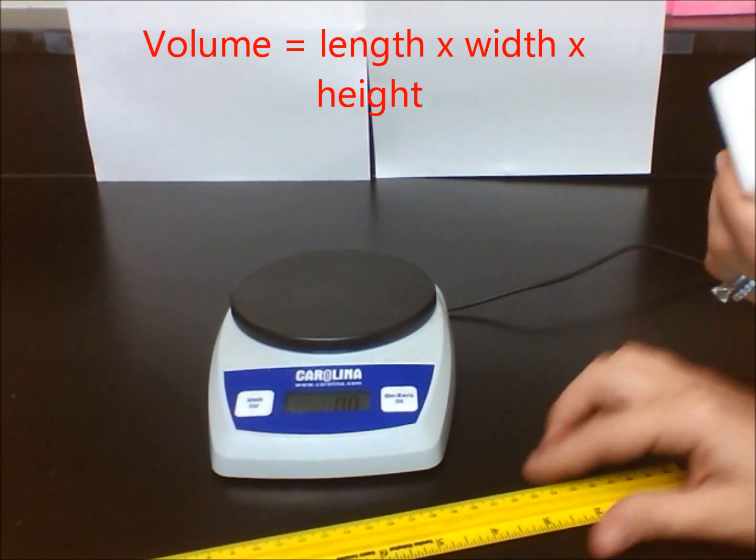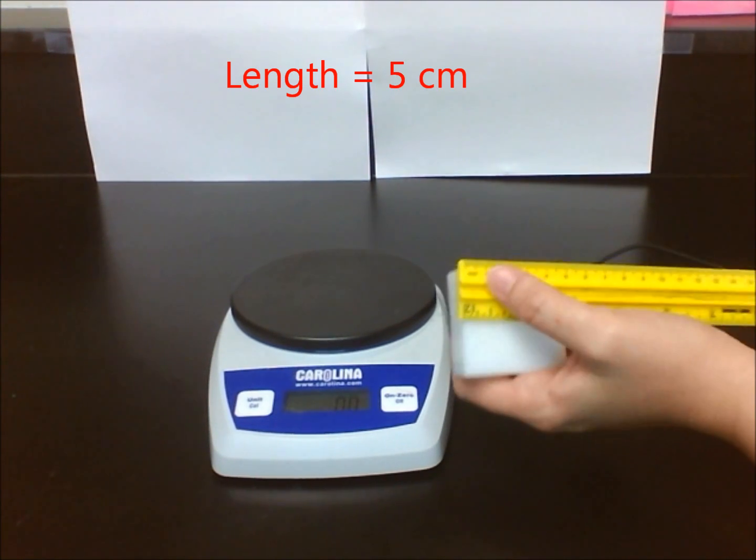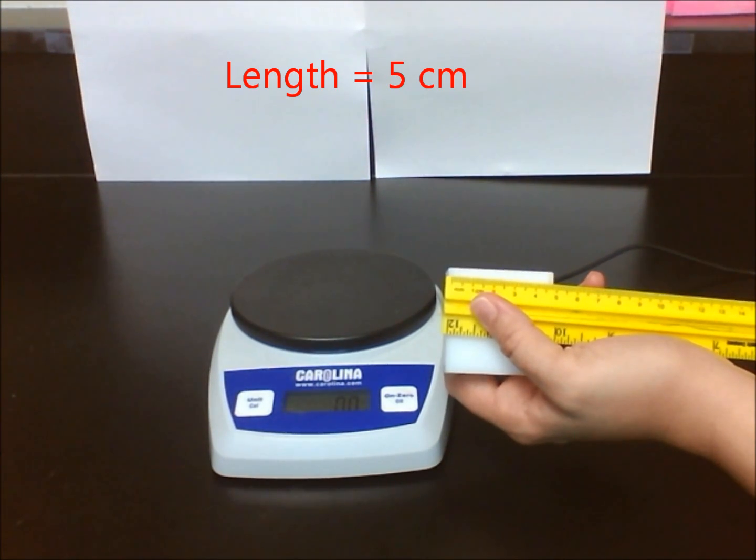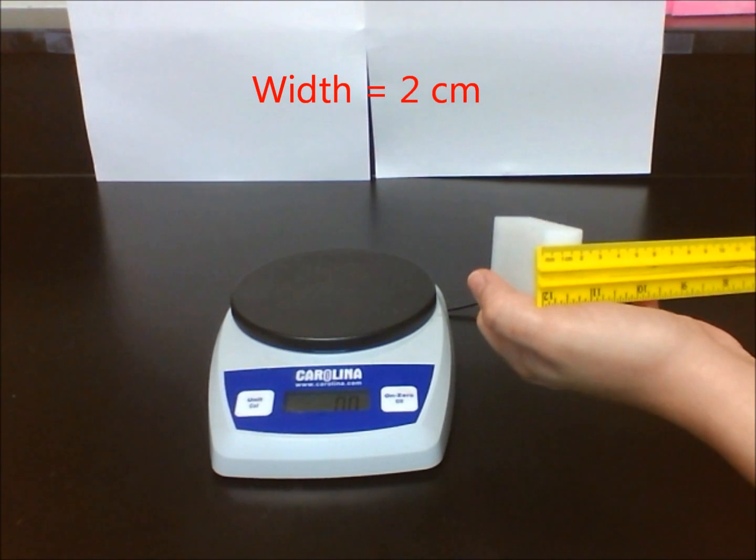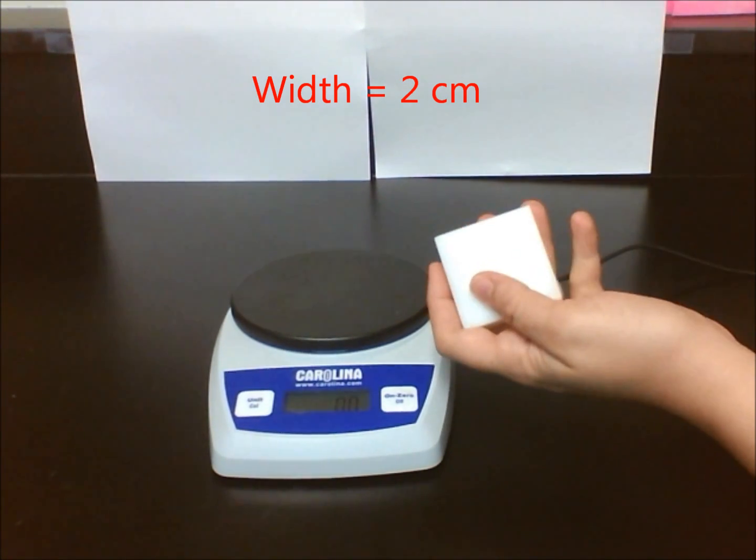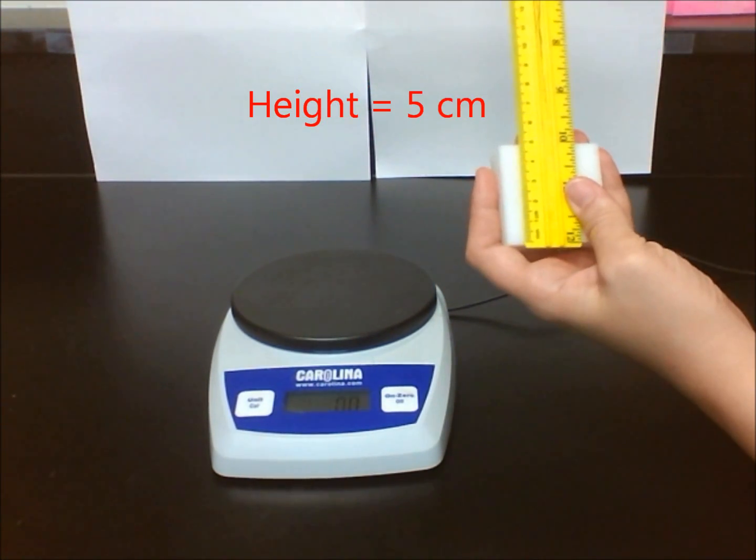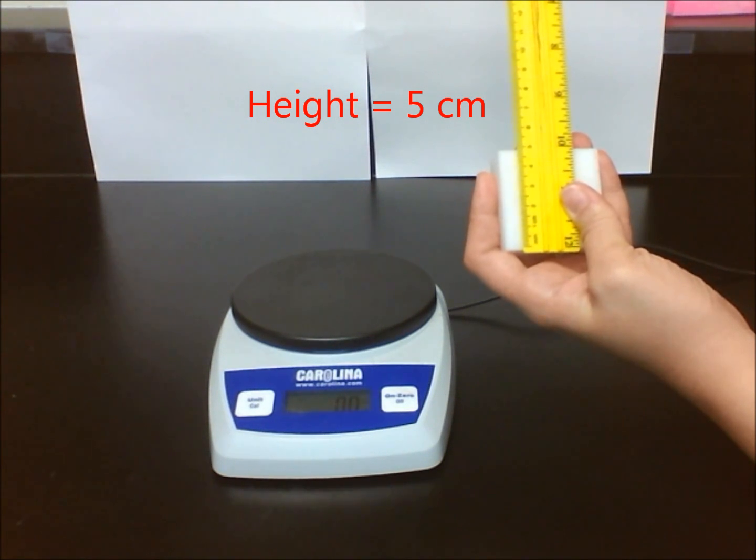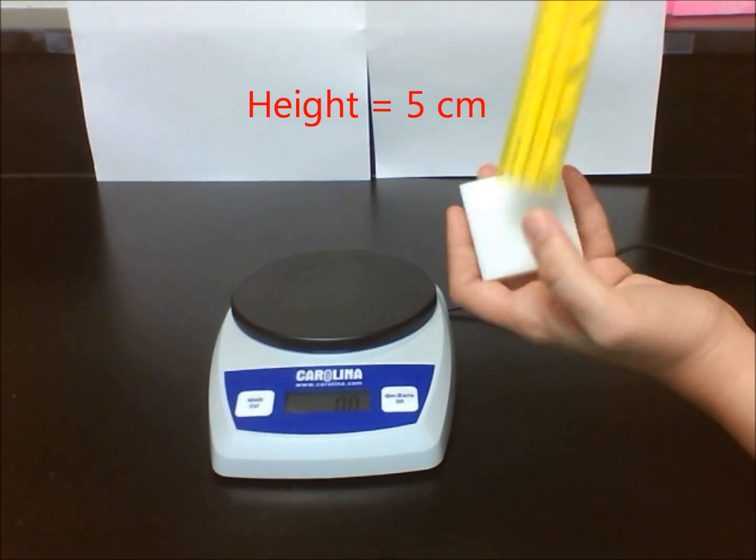First I will start with my white plastic block. I am going to measure the length and record it. Then I will measure my width and record that information. Finally, I will measure the height. You may use mental math or a calculator to multiply these three numbers together and record the total volume in the chart.